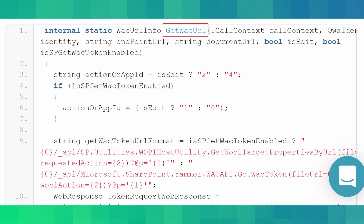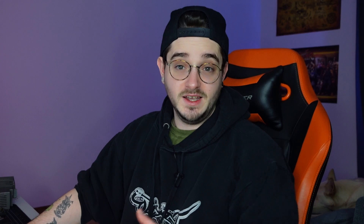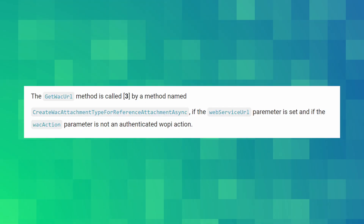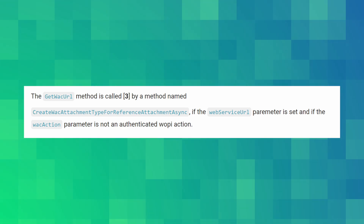The method in question is GetWalkURL, which parses the XML response from an HTTP request. This method is called in a wrapper method also called GetWalkURL. It is located in the OneDrive Pro Utilities class and can be triggered when you define the OneDrive Pro attachment provider, the web service URL parameter is set, and the WALK action parameter is not an authentication WOP action.